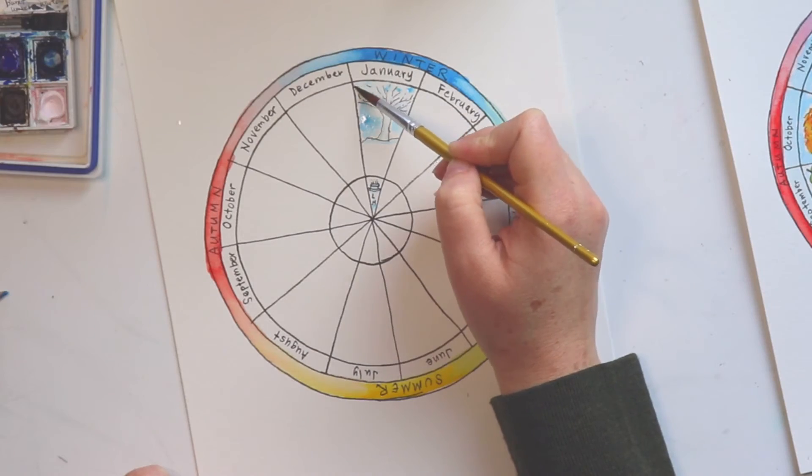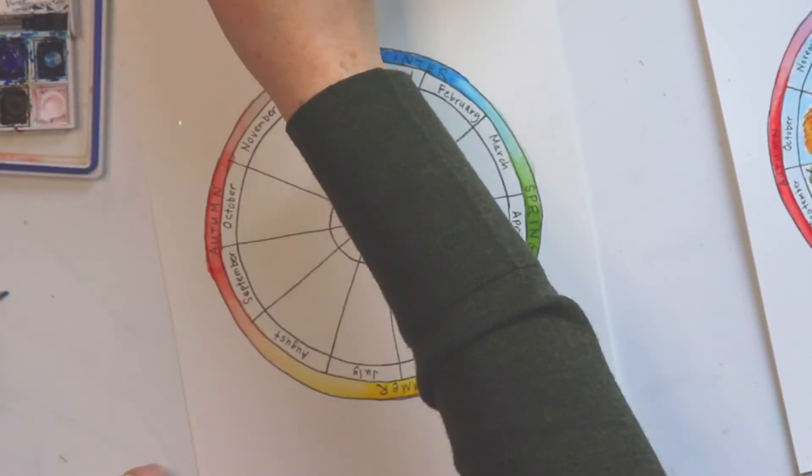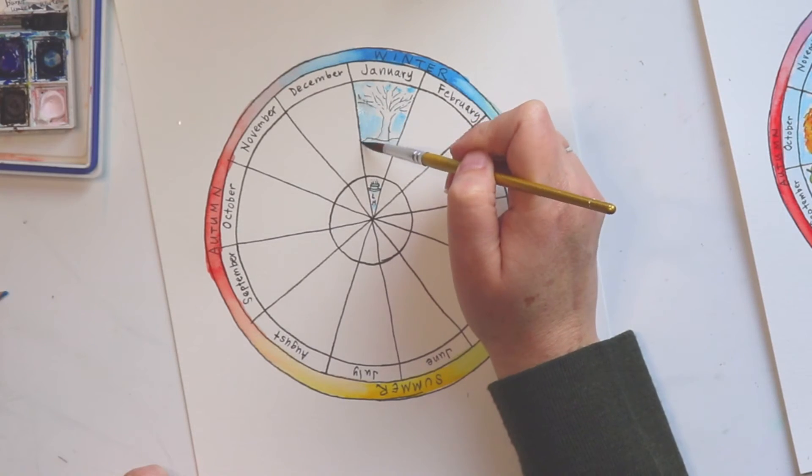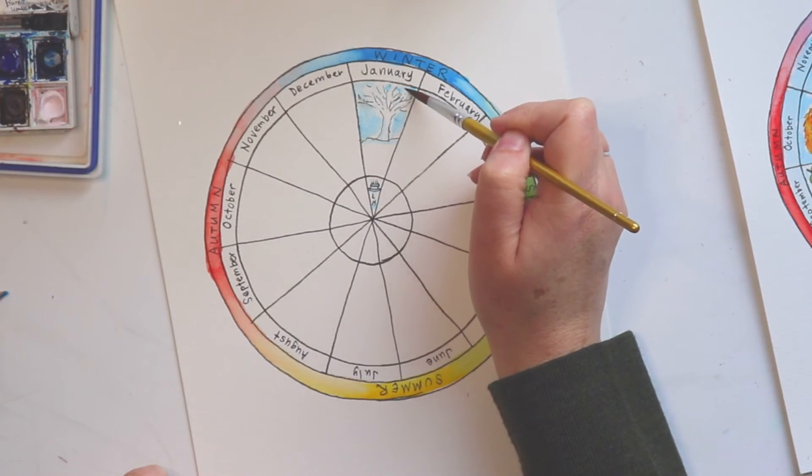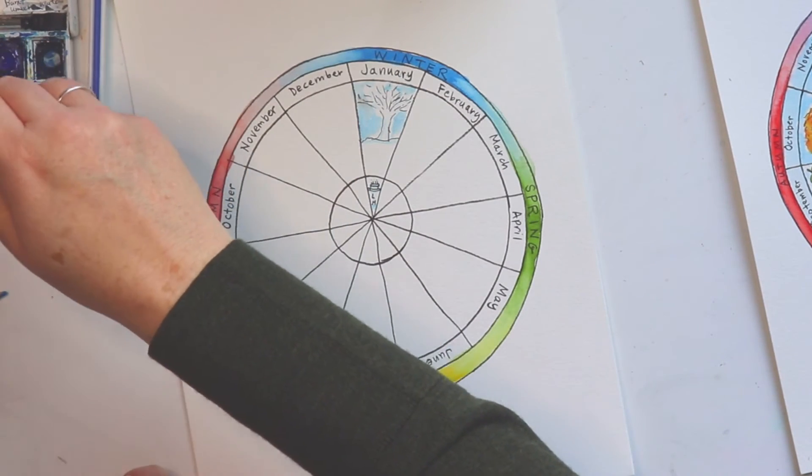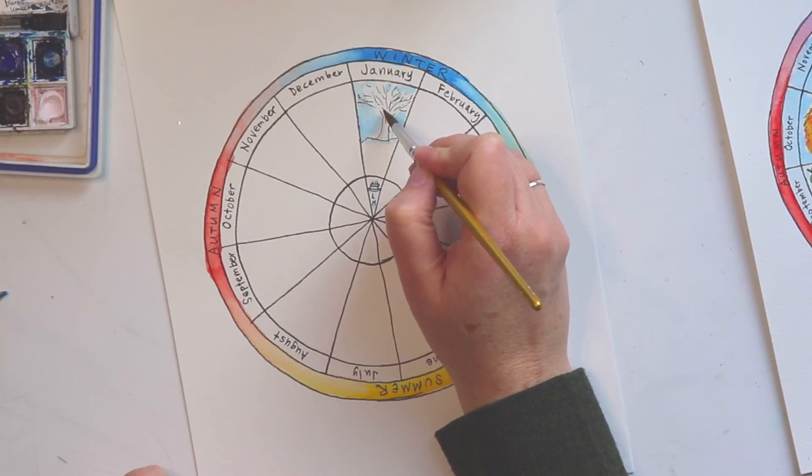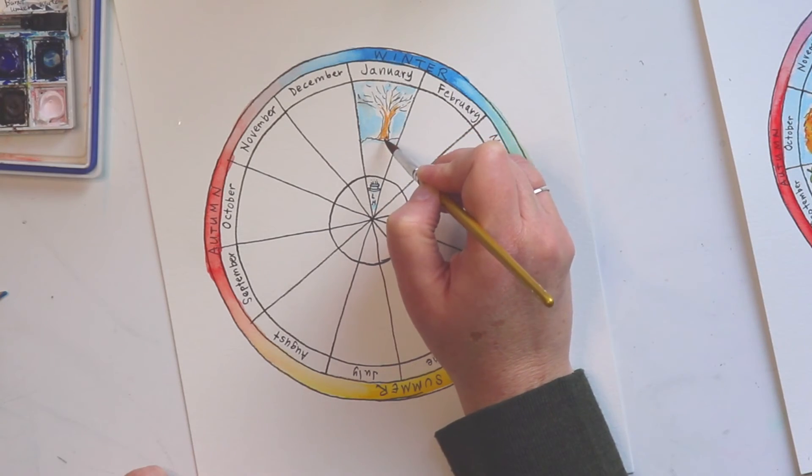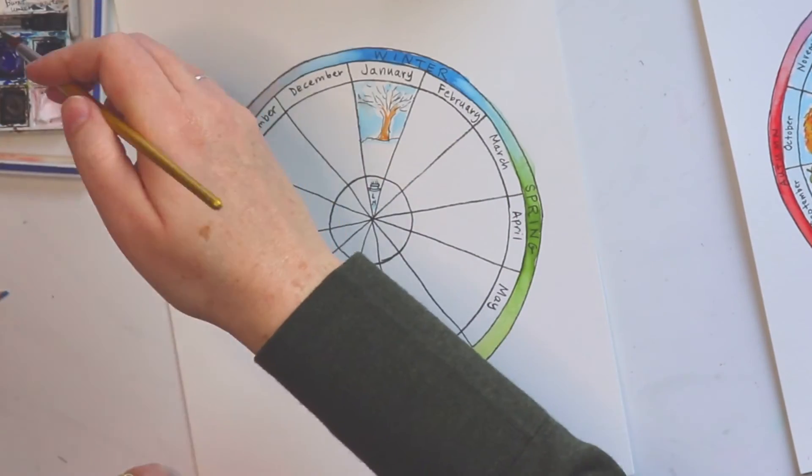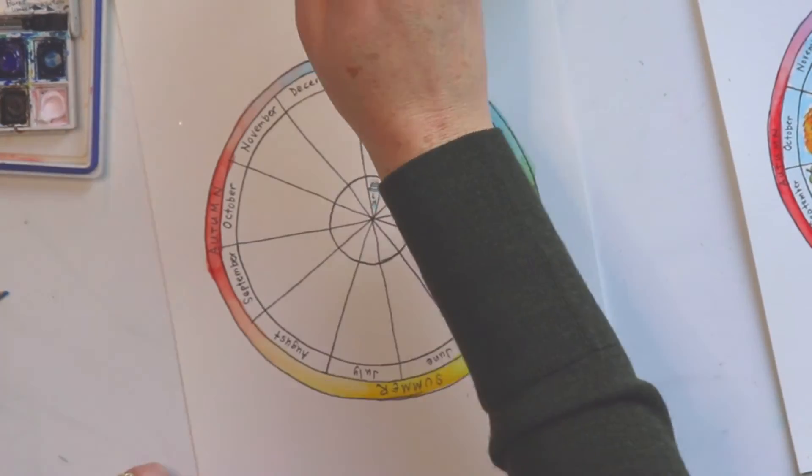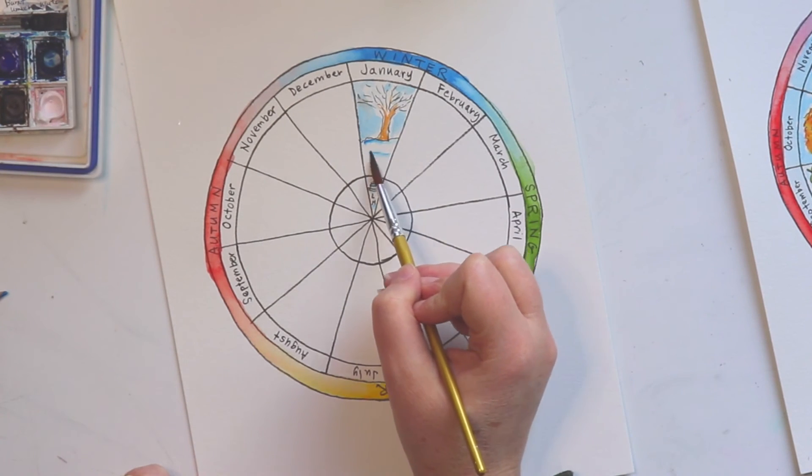And I'm going to do a little bit of blue for the sky area here. I'll just go around those branches. And then my tree trunk is kind of a light brown. I'm just going to add a little tiny bit of brown there. And then my snow. I'll just have a tiny touch of blue. Just lighten that up a little bit.